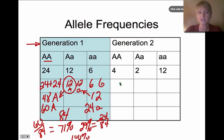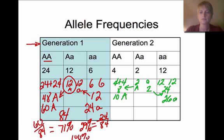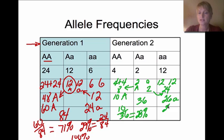In generation 2, the numbers have changed. For homozygous dominant (4 individuals): 8 dominant alleles. For heterozygotes: 2 dominant and 2 recessive, so total dominant = 10. For homozygous recessive (12 individuals): 24 recessive alleles, plus 2 from heterozygotes = 26 recessive alleles. Total alleles = 36. So 10/36 = 28% dominant, and 26/36 = 72% recessive.